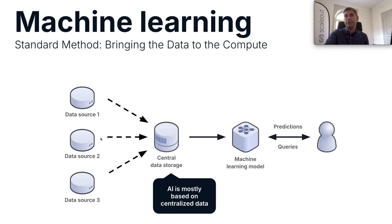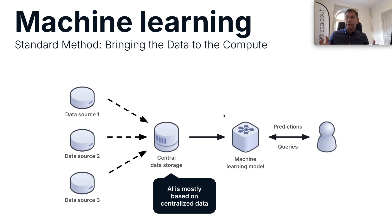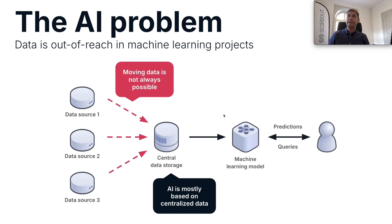We have different data sources, data sources generate data, we collect the data to a central location, do the model training, and once we have the model available we can use it. This whole architecture served us quite well, and most of the progression we have seen in machine learning over the years is due to this centralized kind of architecture. But over the years, things are starting to become more challenging when it comes to collecting the data, and there are good reasons for that.